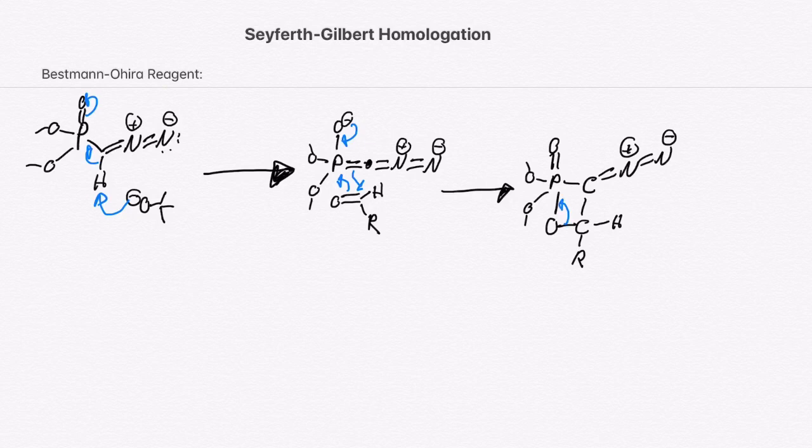And, just like that reaction, we're going to do a retro 2 plus 2, forming the favorable phosphorus-oxygen double bond.